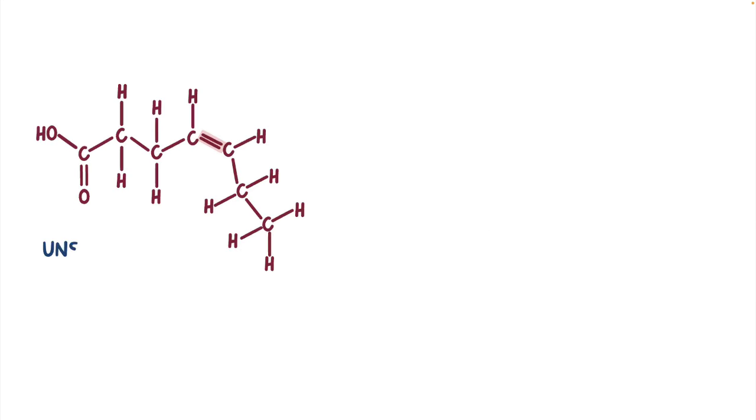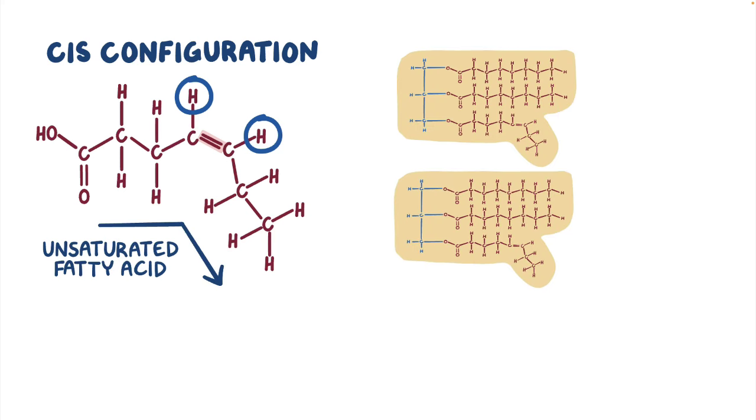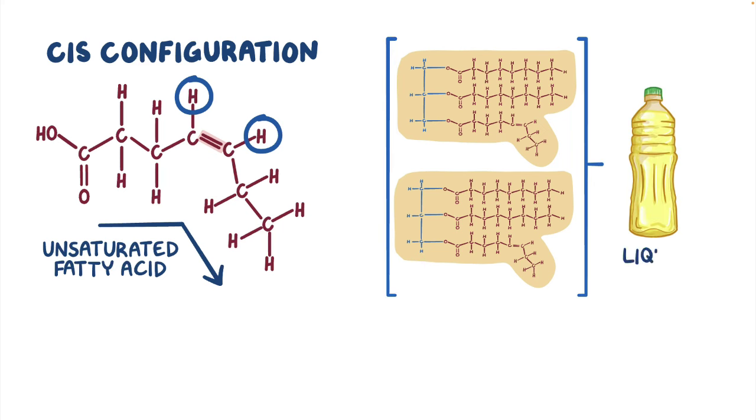Now, looking at the double bond of this unsaturated fatty acid, like most unsaturated fats, it's got a cis configuration. In a cis configuration, the two functional groups are on the same side of the double bonded carbons. Now, when this happens, the fatty acid chain naturally bends. A molecule that bends does not pack tightly together, so it's a lot more fluid. Think about cooking oils, which are liquid at room temperature.